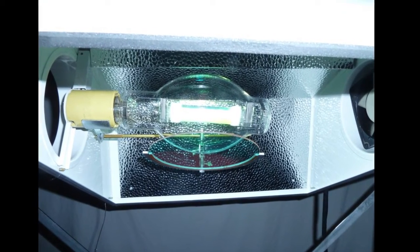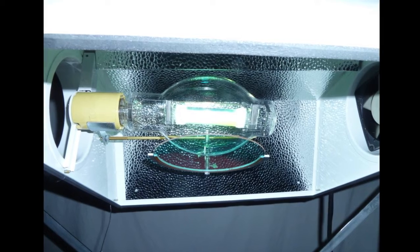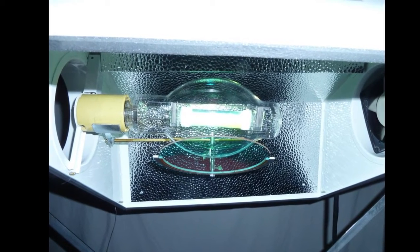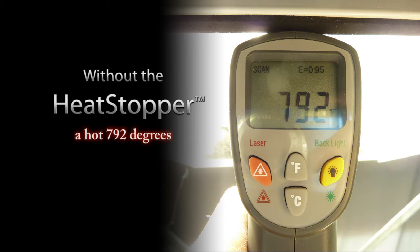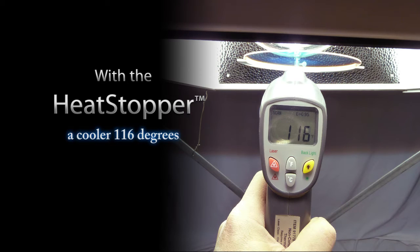Once in place, the Heat Stopper tests show that when a digital thermometer is aimed directly at the Heat Stopper, we have reduced the heat from 792 degrees to 116 degrees.